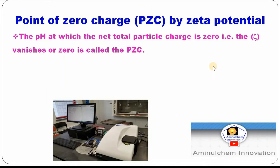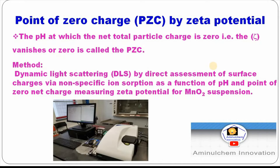The pH at which the net total particle charge is zero — that is when zeta potential reaches zero — is called the point of zero charge. We use dynamic light scattering by direct assessment of surface charges via non-specific ion absorption as a function of pH, and measure zeta potential for manganese dioxide suspension. Here is the experimental setup for dynamic light scattering, which is connected to a desktop.